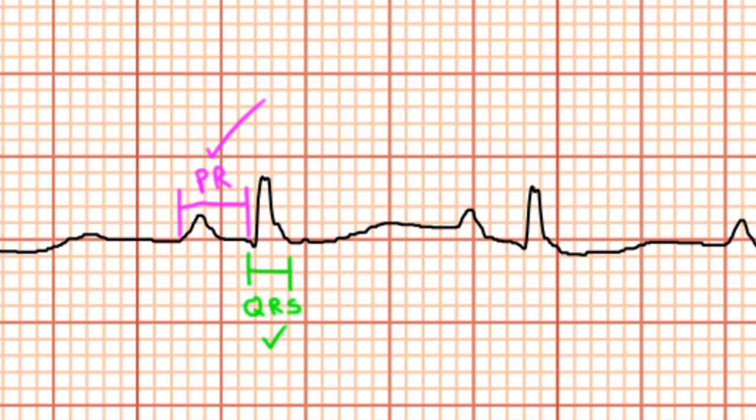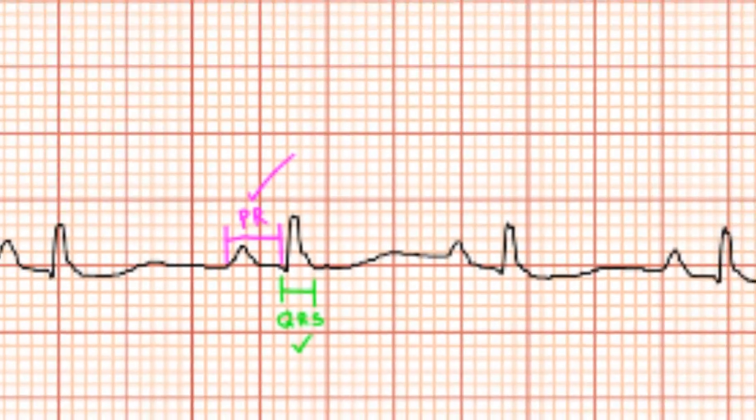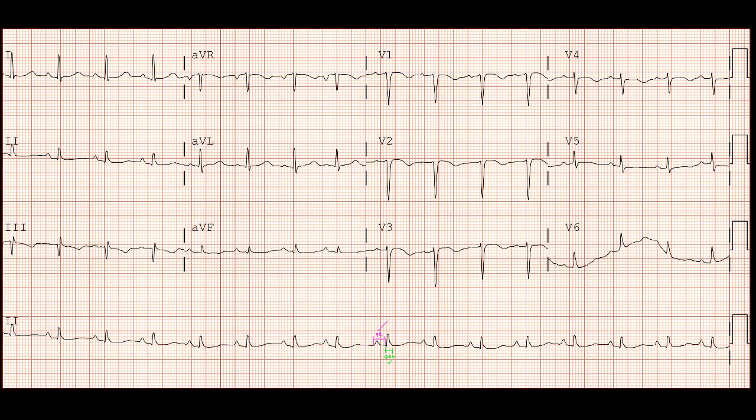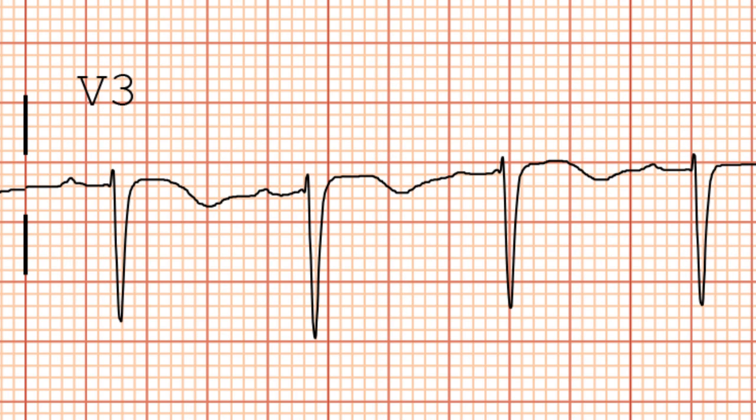For the QT interval, you'll notice that we can't see it that well in this lead. And so, let's take a look at another lead to get a better look. We like to pick the lead where it's most easy to find, and where it tends to be the longest. Looking at these leads, I'd say it looks longest in the precordial leads. So, let's take a closer look at lead V3. Here you can see after the QRS complex, you have the ST segment, followed by an inverted T wave.